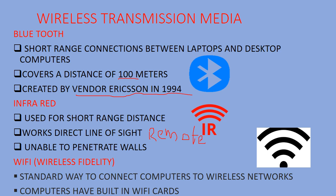Next is Wi-Fi. The full form of Wi-Fi is wireless fidelity. It is a standard way to connect computers to a wireless network. Wi-Fi signals are inbuilt in our smart devices, computers, and laptops, just like Bluetooth.